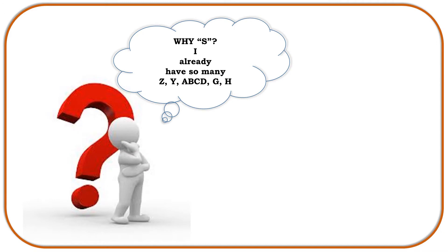In the next lecture, we are going to first see that if we are already having other port parameters like the impedance matrix or the admittance matrix — all these port parameters are anyway available — then why do we require to investigate the scattering parameters? What is the use of scattering parameters when we already have other port parameters available?